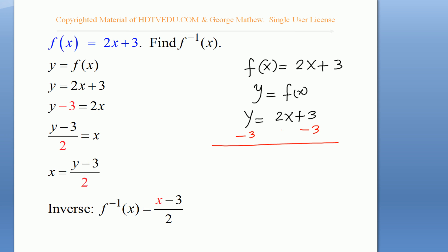So we get y minus 3 is equal to 2x. Divide both sides by 2, so we get (y - 3)/2 = x. Now change y to x and x to the inverse function, and we have f⁻¹(x).